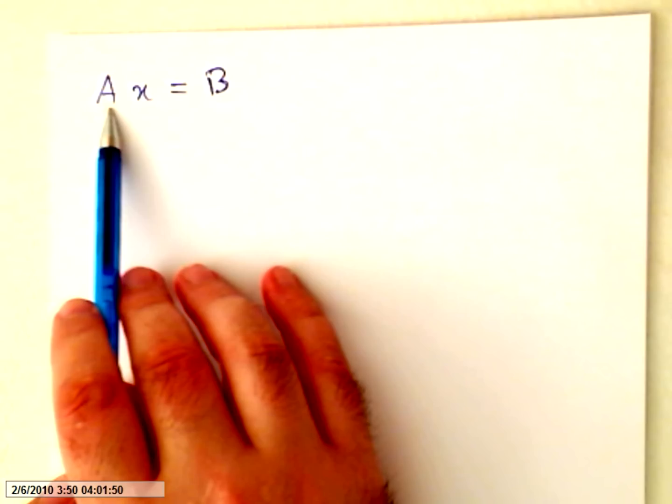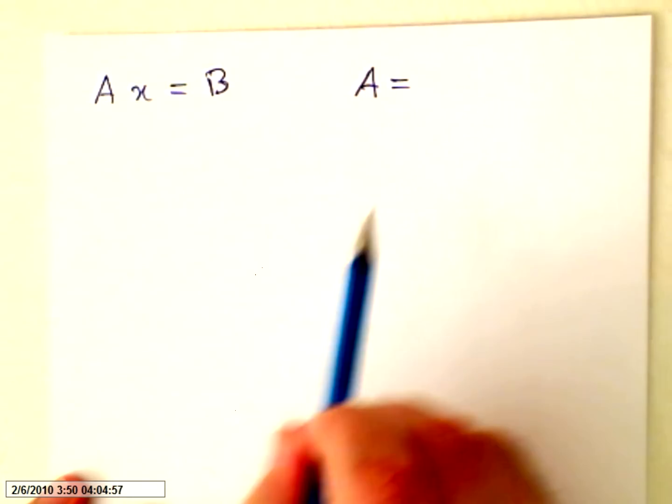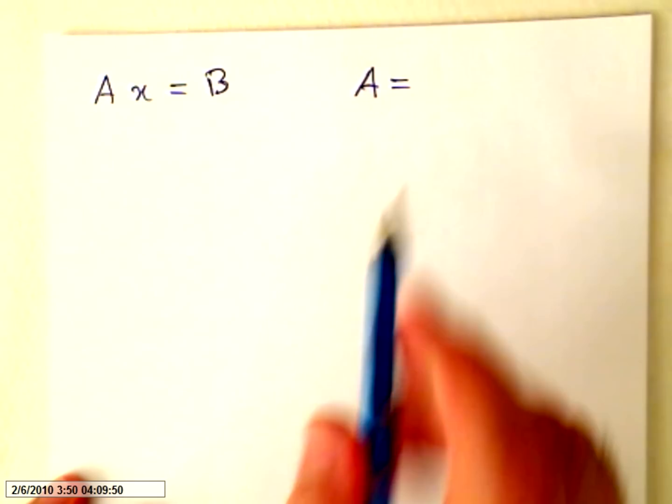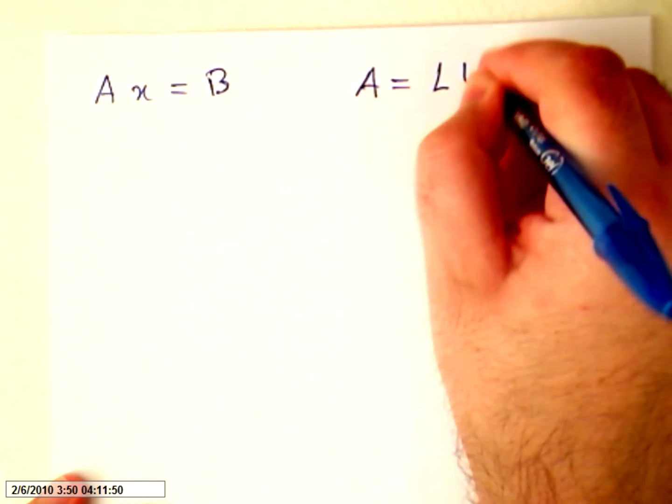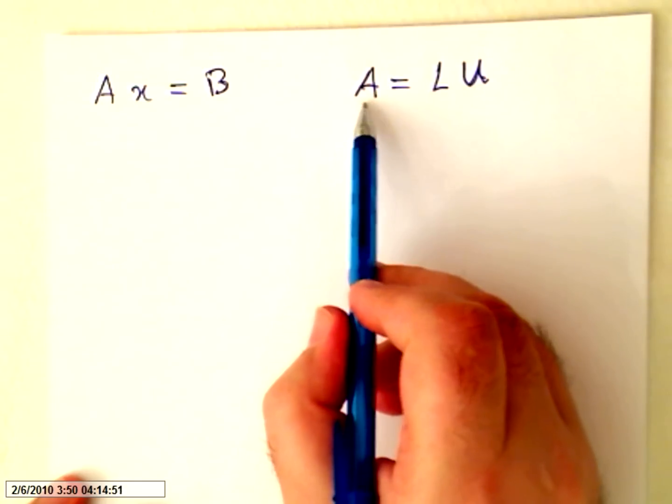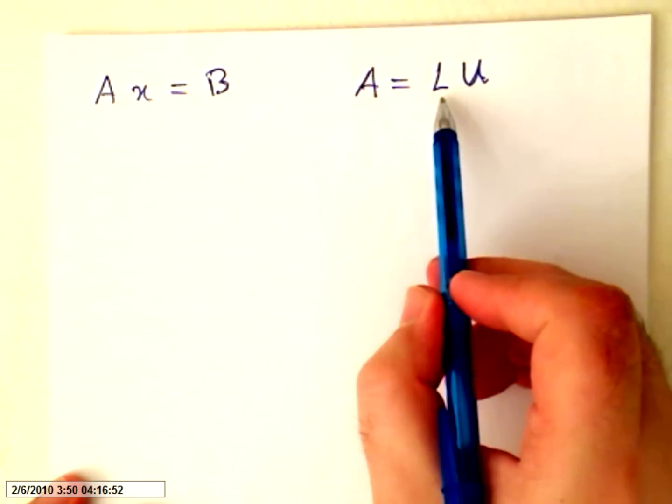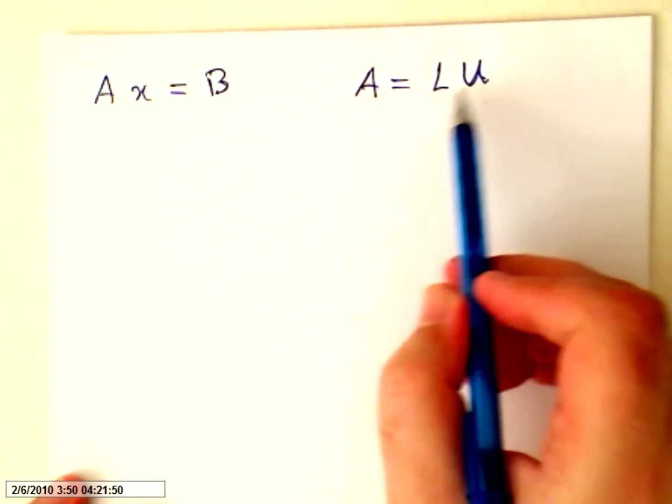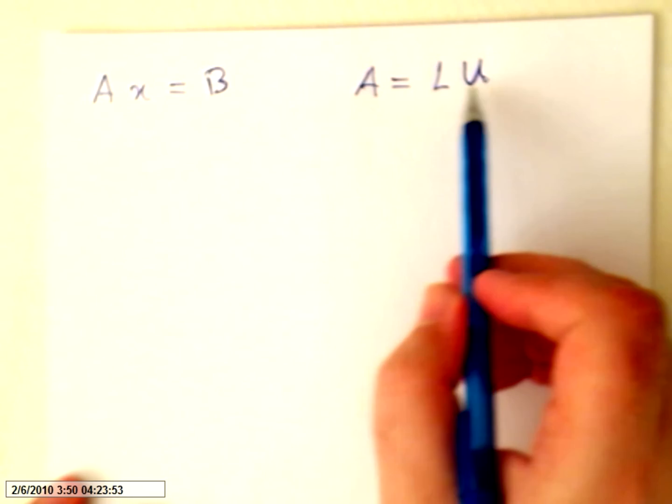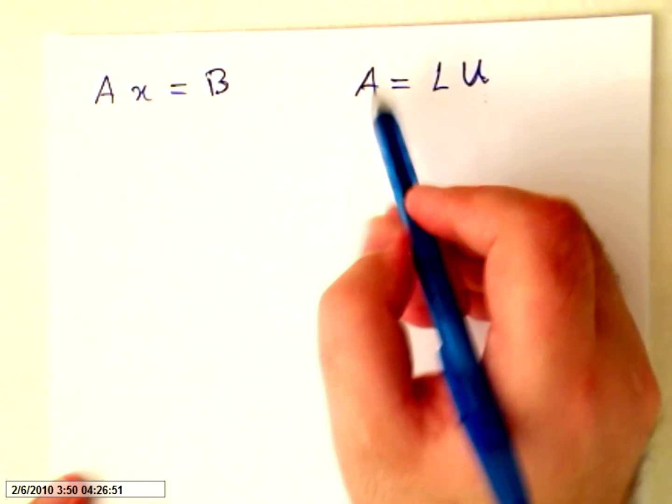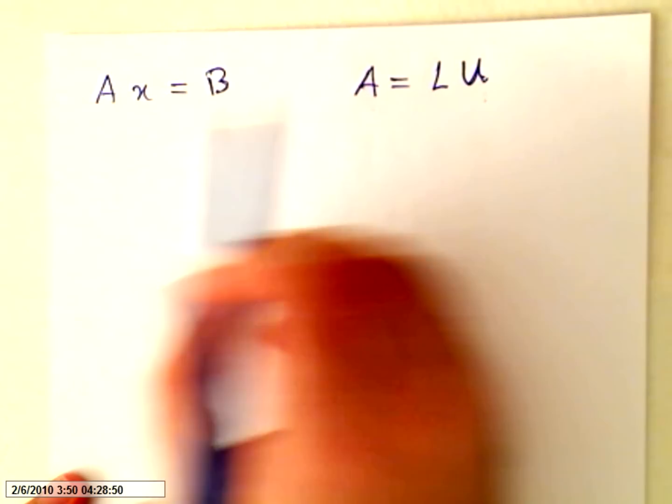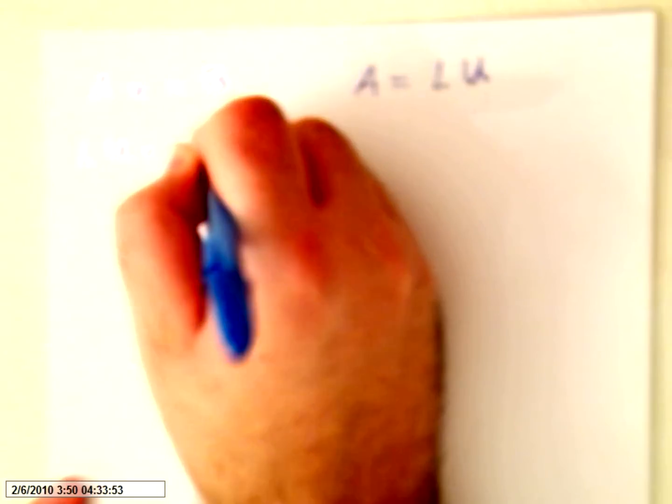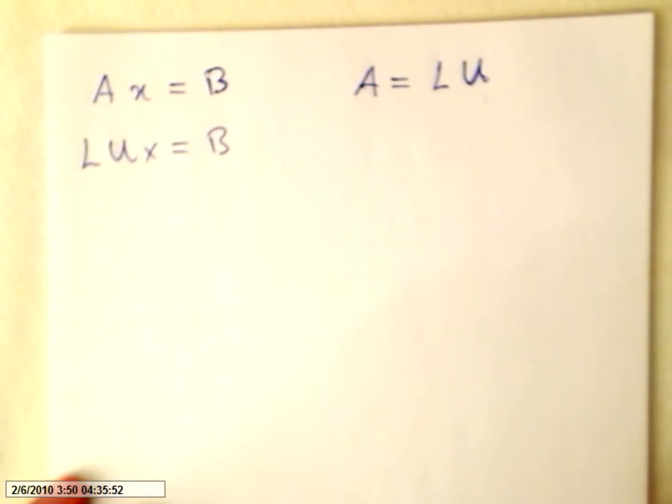we will get matrix A and we will make LU decomposition. So first we transform a matrix into a product of two triangular matrices, a lower one and an upper one. When this is done, we replace A by LU. So it will be LUX equals B.